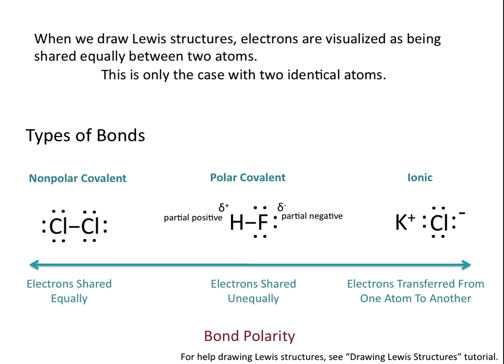When you have a polar covalent bond, you can designate partial positive and partial negative charges using the Greek symbol delta. Because fluorine has a greater pull on the electrons in the hydrogen-fluorine bond than hydrogen does, those electrons will be near fluorine more often than they would be near hydrogen, giving fluorine a partial negative charge. Because the electron wasn't transferred from hydrogen to fluorine, fluorine doesn't have a complete negative charge like in the example of KCl, but those electrons will be more often around the fluorine atom, so fluorine has a partial negative charge, and this leaves the hydrogen atom with a partial positive charge.